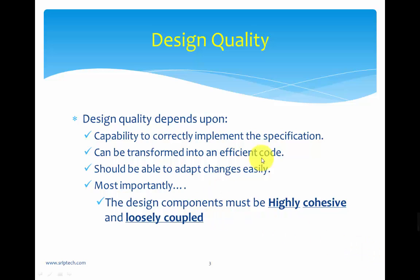Design quality depends upon the capability to correctly implement the specification. If your design actually implements the specification properly, then we say it is a quality design. Specification refers to your requirement specification and functional specification, as depicted in your SRS. A quality design can also be transformed into efficient code and, most importantly, it should be able to adapt to changes easily.